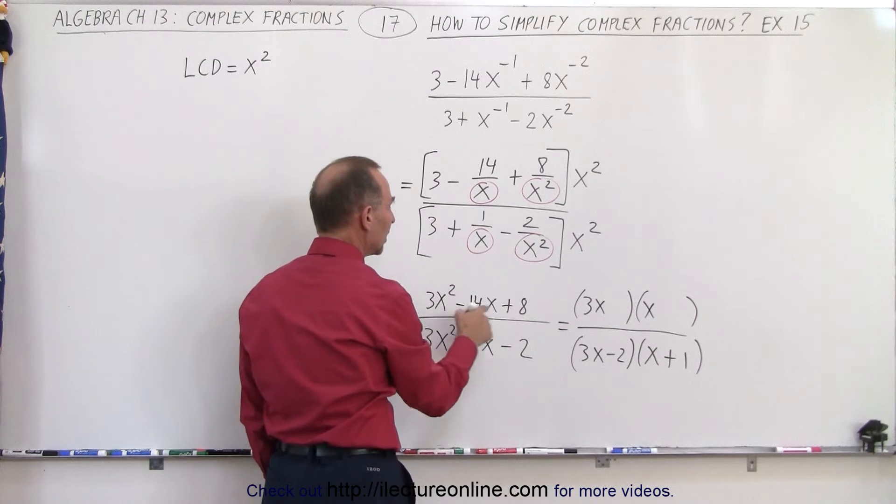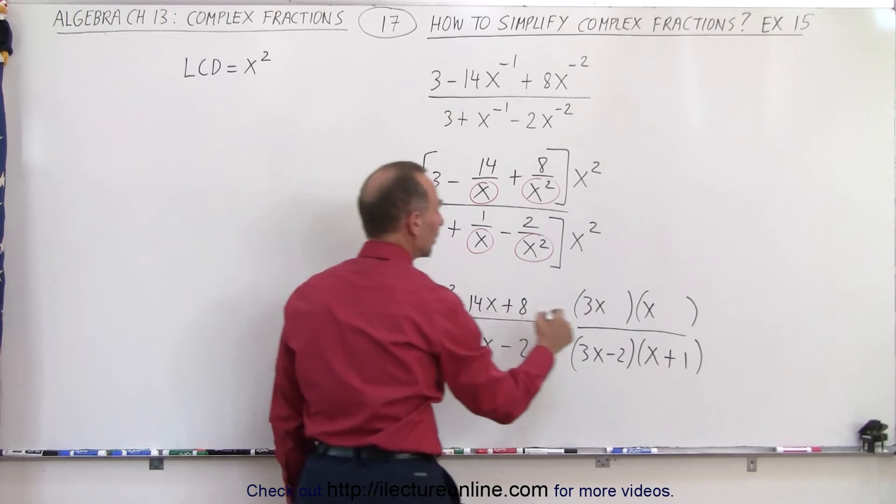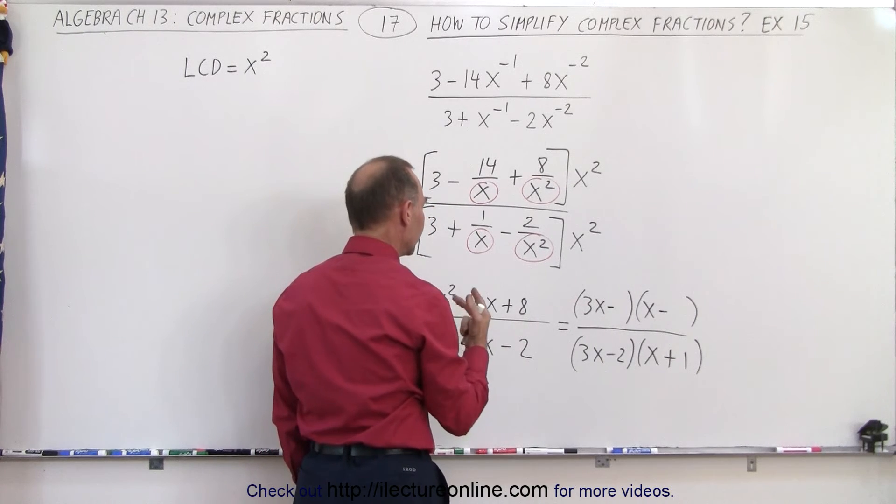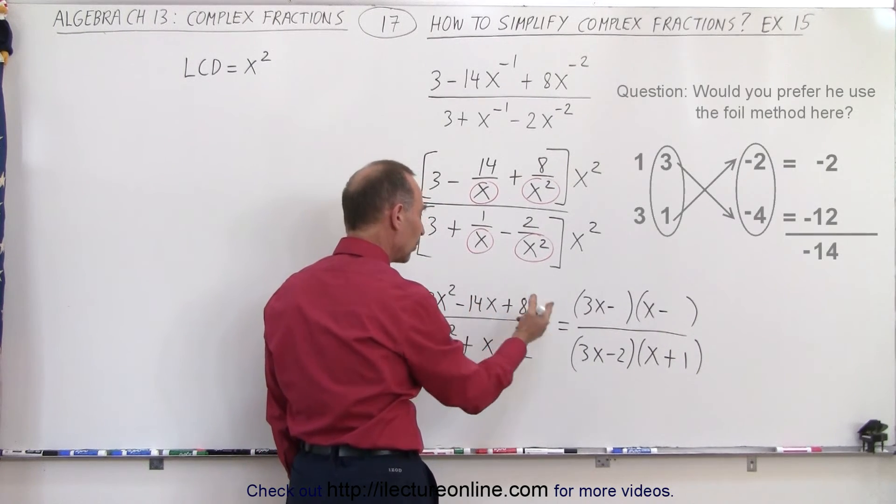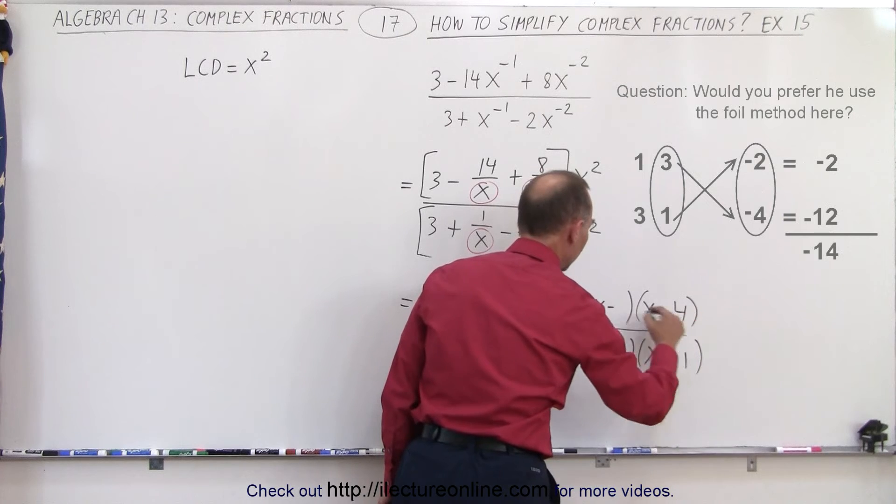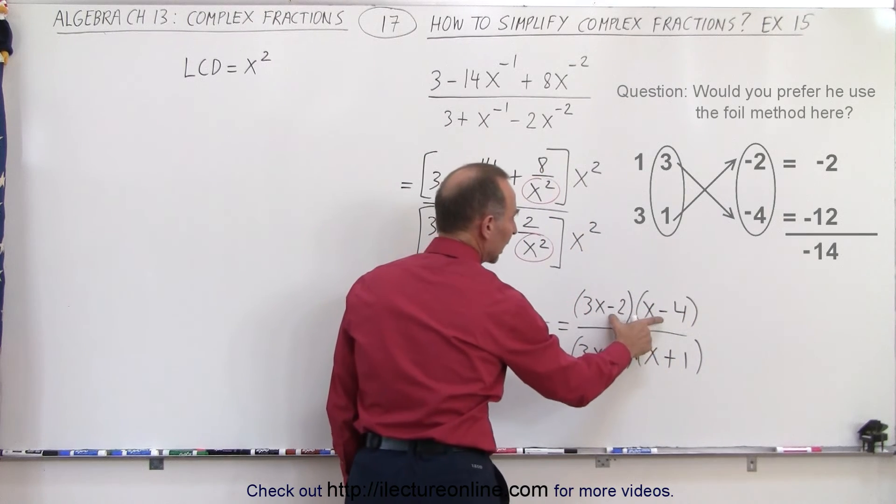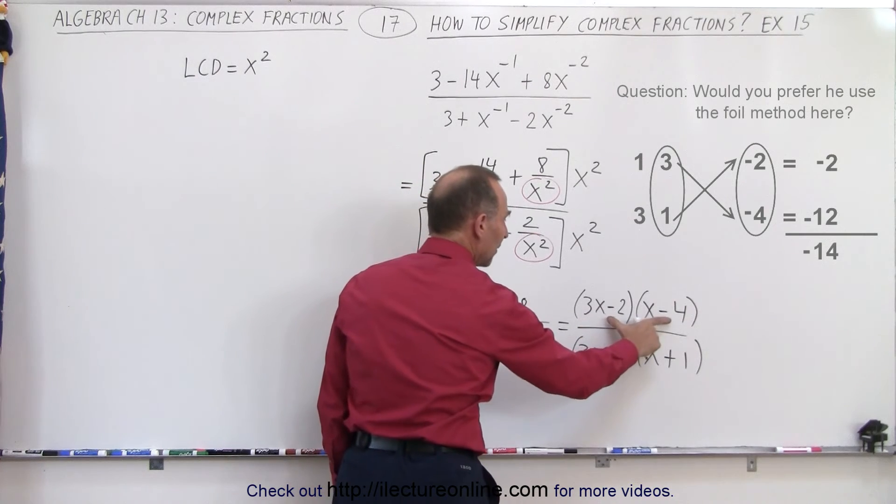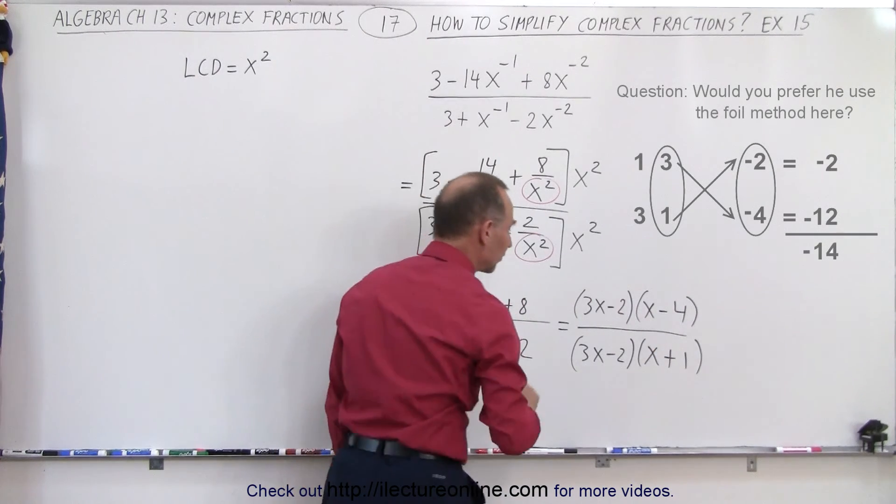We have a minus 14 and a plus 8. That means that both of these need to be minus. And I need a 14, that means 3x times 4 and times 2, because negative 2 times negative 4 is plus 8. Here we get a minus 12 and minus 2 is minus 14 and a 3x.